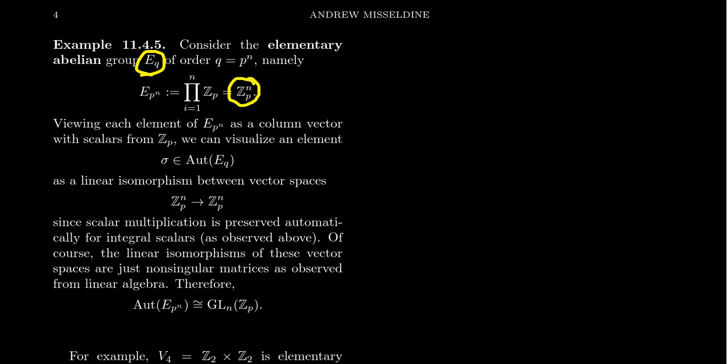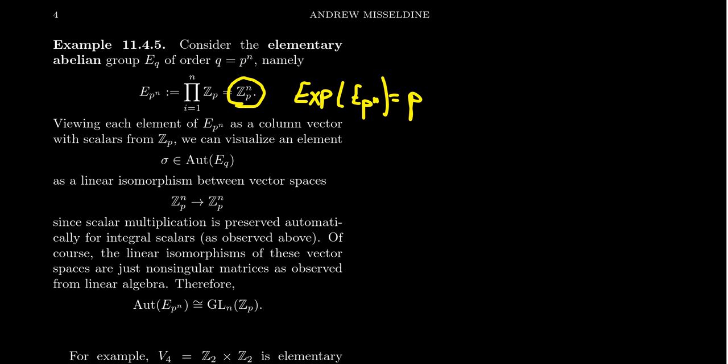Besides cyclic groups, elementary abelian groups are among the simplest abelian groups to study. Something interesting about them is that the exponent of an elementary abelian group is always just p — that is, if you raise every element to the p-th power, you get back the identity. One reason they are so simple, aside from having minimal exponent, is that we can actually study them using linear algebra.